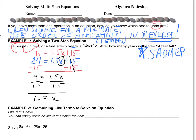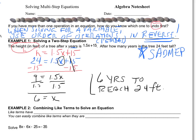To answer this question, we say 6 years to reach 24 feet. It's important that we leave labels, and it's important that we box in our answers so that everybody knows exactly what we meant to say.